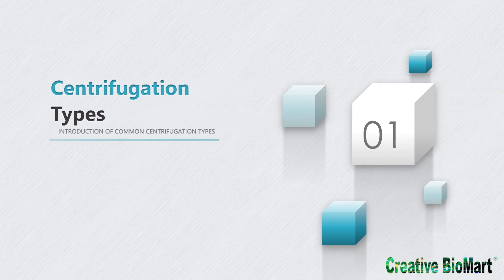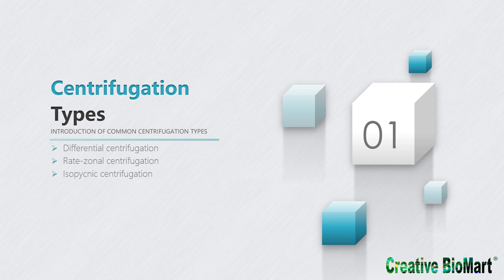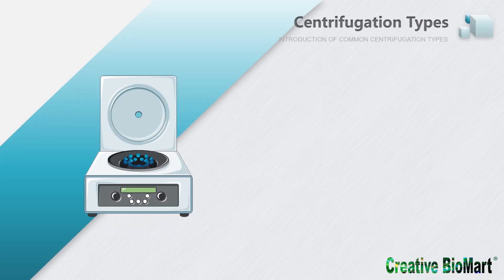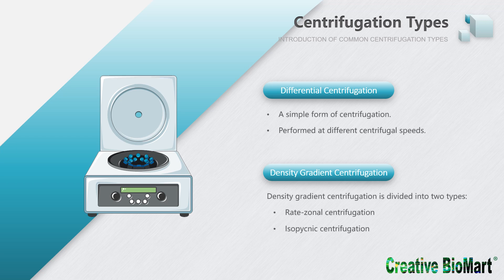Let's start with the first part of this video: centrifugation types. This section mainly introduces differential centrifugation, rate-zonal centrifugation, and isopycnic centrifugation. There are two common centrifugation methods: differential centrifugation and density gradient centrifugation. Density gradient centrifugation can be further divided into rate-zonal and isopycnic centrifugation.